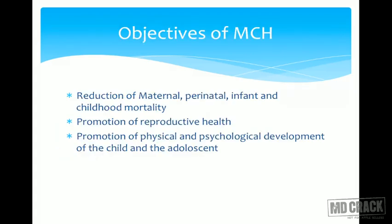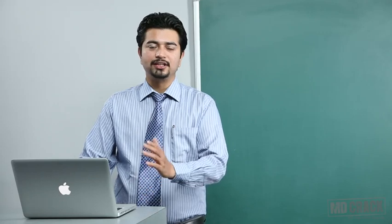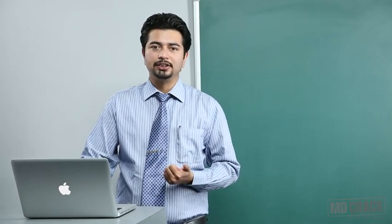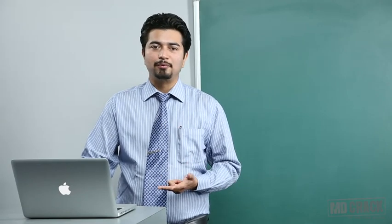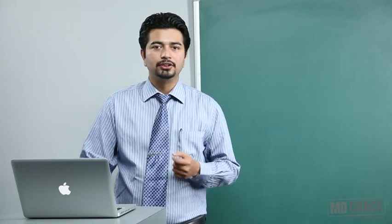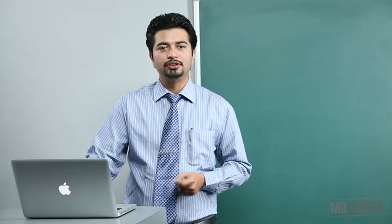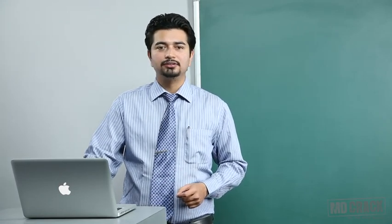The objectives of maternal and child health are very important and can be directly tested. The first objective of MCH is reduction of maternal, perinatal, infant, and childhood mortality. The second objective is promotion of reproductive health in the population and promotion of physical and psychological development of the child as well as the adolescent. The target groups are antenatal mothers, their delivery, their postnatal period, children, and adolescents.